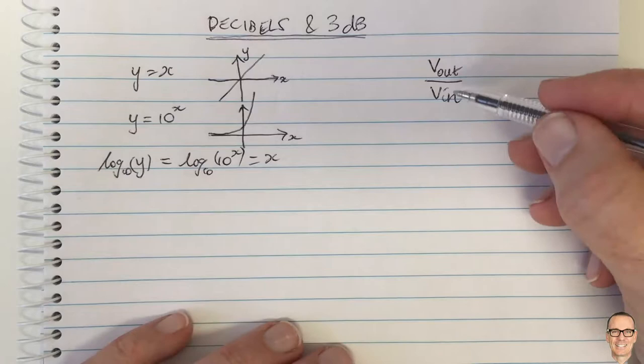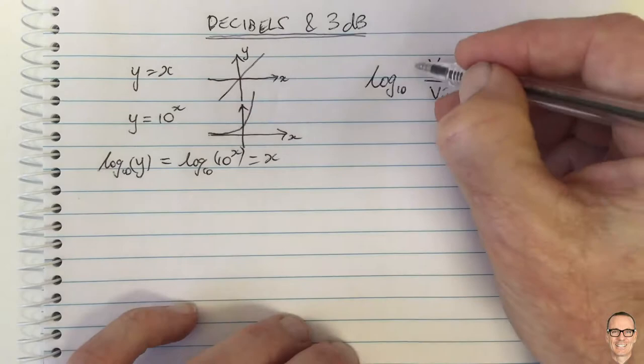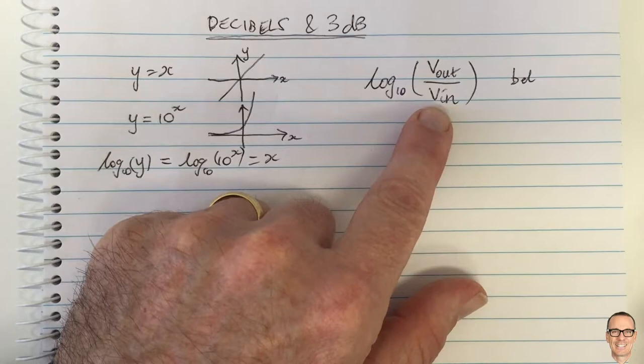Well again this relationship often has this kind of power type expression and so it's very common to look at the log of that function. Now if you take the log of that function like this, this is in the unit of a Bell. This is named after Alexander Graham Bell.